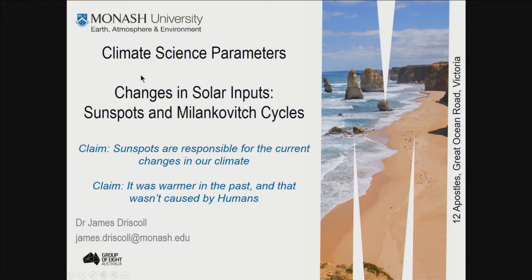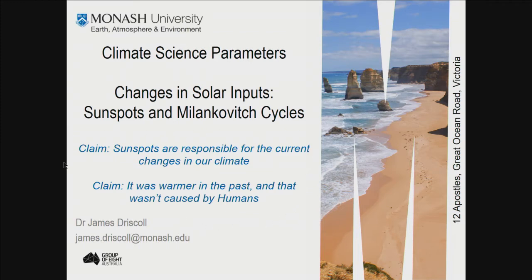We're also going to look at two claims. The first is that sunspots are responsible for the current changes in our climate. The second is that it was warmer in the past and that wasn't caused by humans. These are two claims which climate change sceptics often make, so we're going to fact-check them and show how you can fact-check these claims yourself.